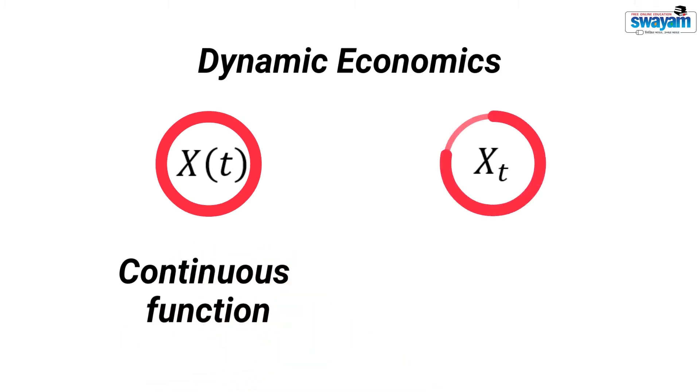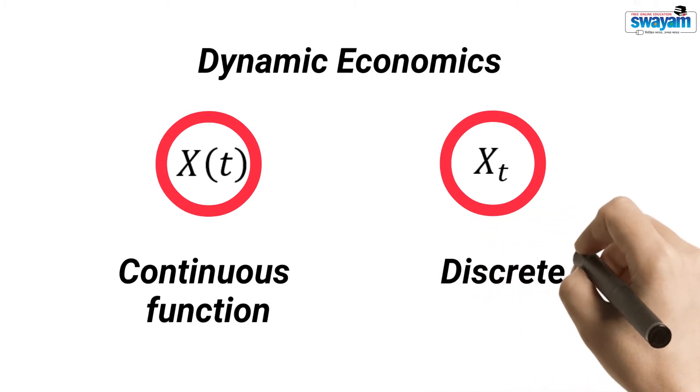If t is written as a suffix, it denotes a discrete function.